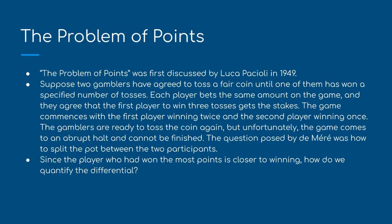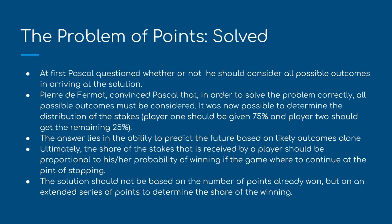Since the player who had won the most points is closer to winning, the question was how to quantify the differential. Pascal questioned whether or not to consider all possible outcomes. Pierre de Fermat convinced Pascal that all possible outcomes must be considered to solve the problem correctly. It was then possible to determine the distribution of the stakes: player one should be given 75% and player two should get the remaining 25%. The answer lies in the ability to predict the future based on likely outcomes. The share of stakes received by a player should be proportional to his or her probability of winning if the game were to continue, not based on the number of points already won.